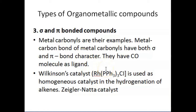An example is Wilkinson's catalyst, which is used as a homogeneous catalyst in the hydrogenation of alkenes, also known as Ziegler-Natta catalyst. So, to summarize, there are three types of organometallic compounds: sigma bonded, pi bonded, and sigma and pi bonded compounds.